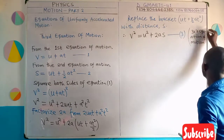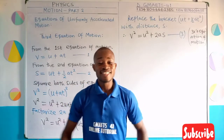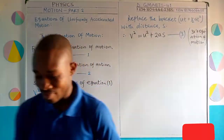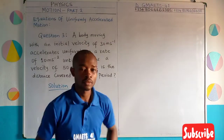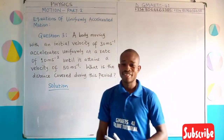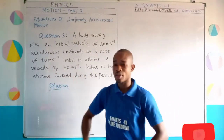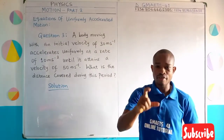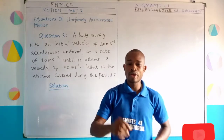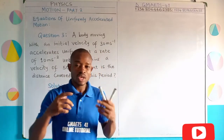We are done deriving the three equations of uniformly accelerated motion. It is now time to see how we use them to solve questions. A body is moving with an initial velocity of 30 meters per second. This body accelerates uniformly at a rate of 10 meters per square second until it attains a new velocity of 50 meters per second. How can you determine the distance covered by this body?